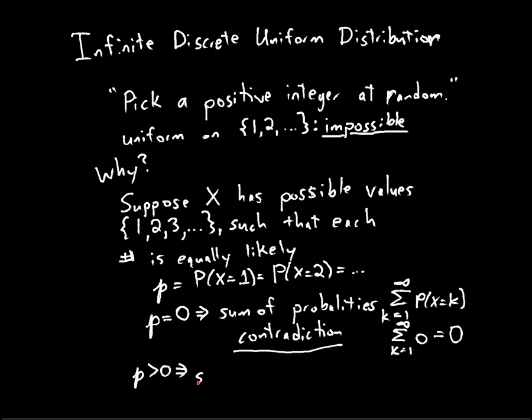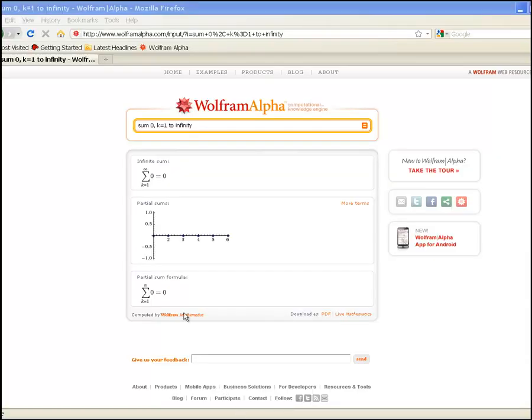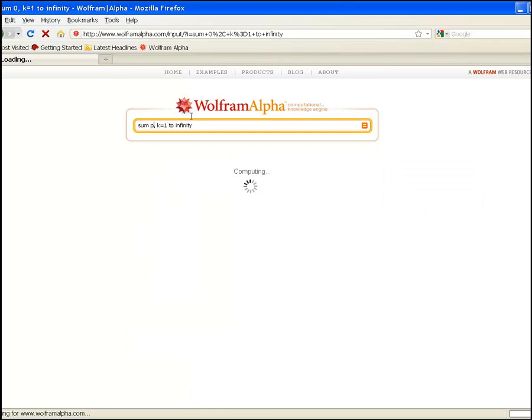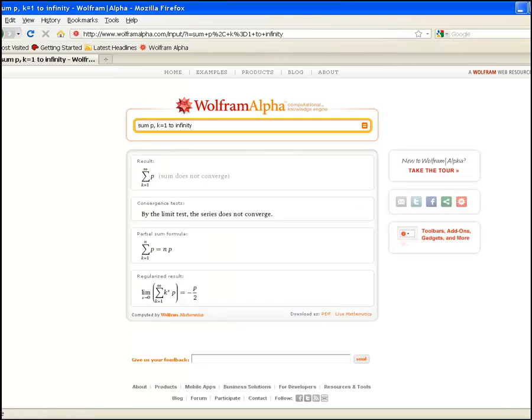Well, then that implies that the sum of the probabilities, sum from K equals one to infinity of P, it diverges. This sum ends up being infinite. And I'm not sure if Wolfram Alpha will tell us that or not, but we'll go see. Let's say I sum P from K equals one to infinity. Sum does not converge. Sum does not converge. So, that means it diverges. In other cases, it's certainly not one.